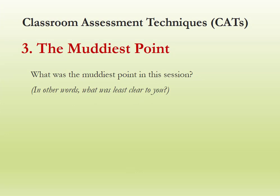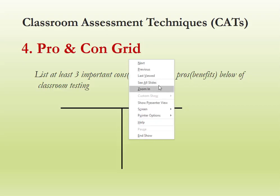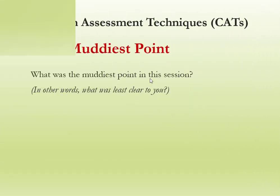The third technique is the muddiest point. The word 'muddiest' is taken from 'mud.' We ask: 'What was the least clear to you?' In this activity, you can ask students — based on all class sessions — which concept or topic they didn't understand very well. This gives the teacher an idea of the weak points and what was least clear to students, so you can revise it in the upcoming class.